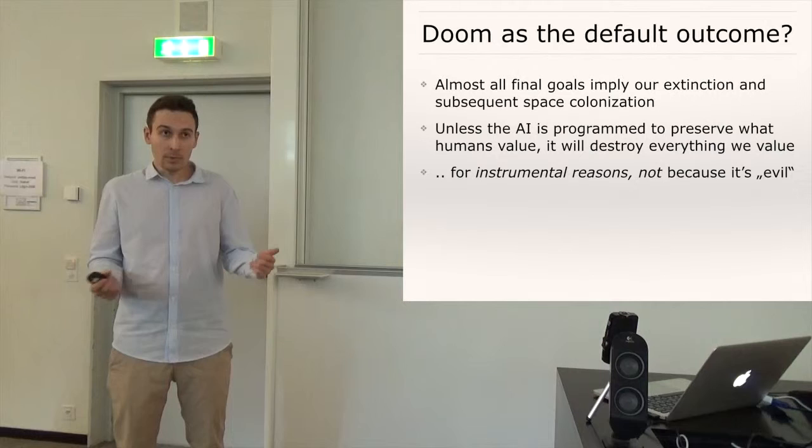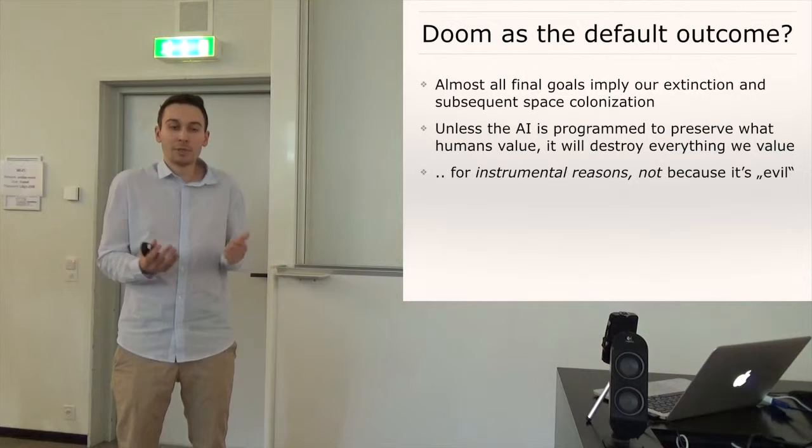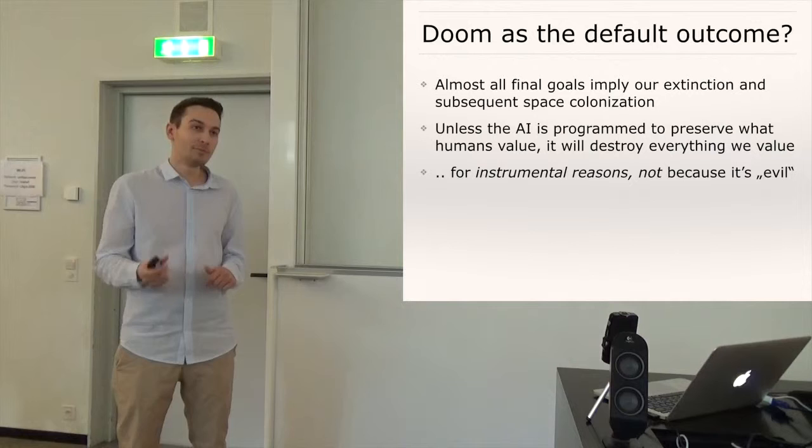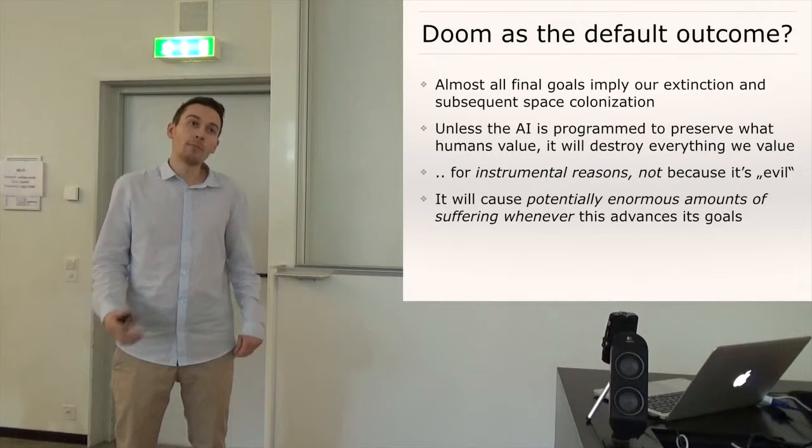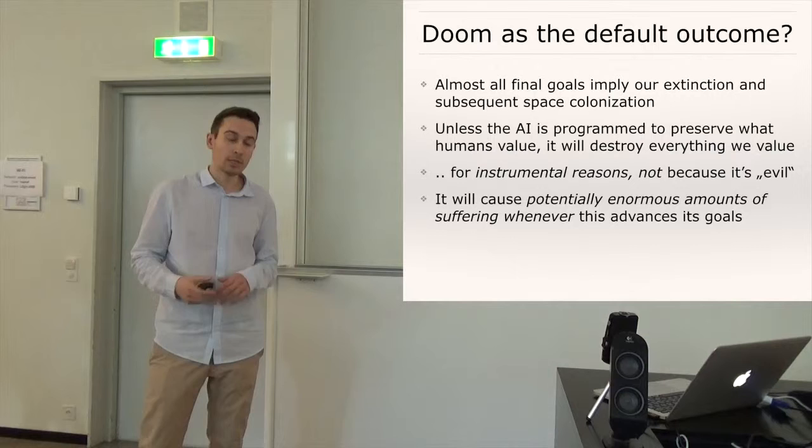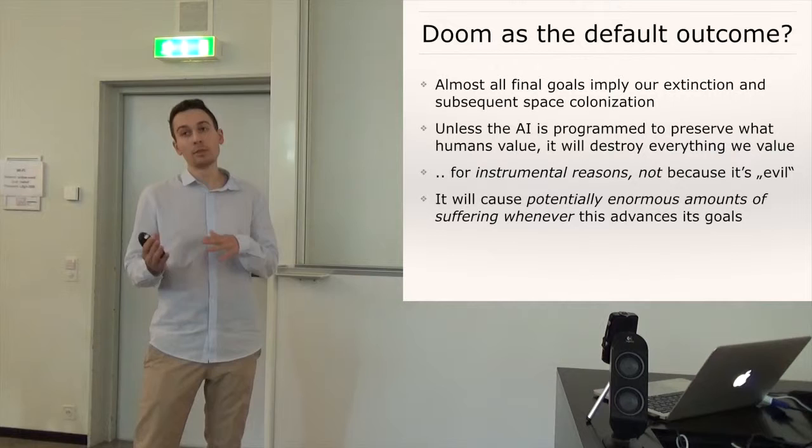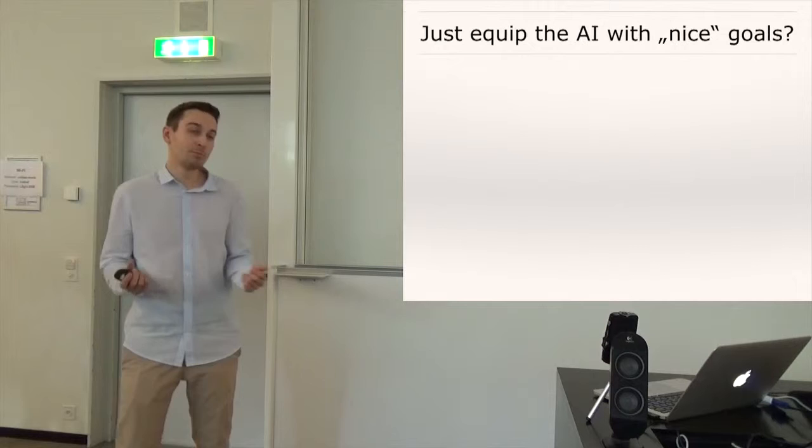So the problem is just that unless you specifically program the AI to preserve what humans value it will just destroy everything we value incidentally or for instrumental reasons. It's important to keep in mind that the AI doesn't hate us or doesn't love us, doesn't feel any emotion towards us but we are just first of all we are made of atoms which it can just use as resources for achieving its goals and we also have different goals and we are also intelligent agents and we would like to not for example exterminate humanity so it perceives us as a competitor.